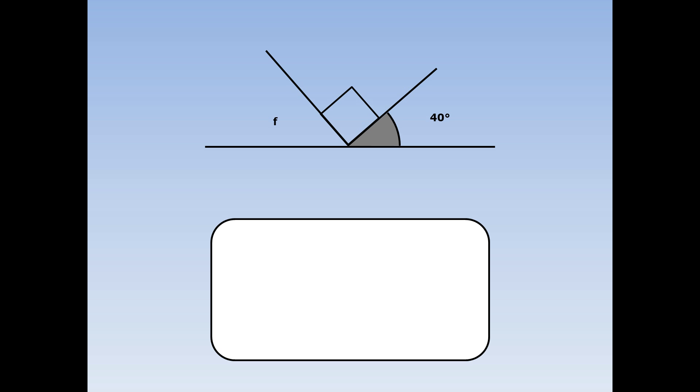On this straight line, F, the right angle and 40 degrees add up to 180. So to work out what F is, firstly add up the right angle and 40. Remember our right angle equals 90 degrees. So 90 plus 40 equals 130. Then I do 180 take away 130 equals 50. F equals 50.